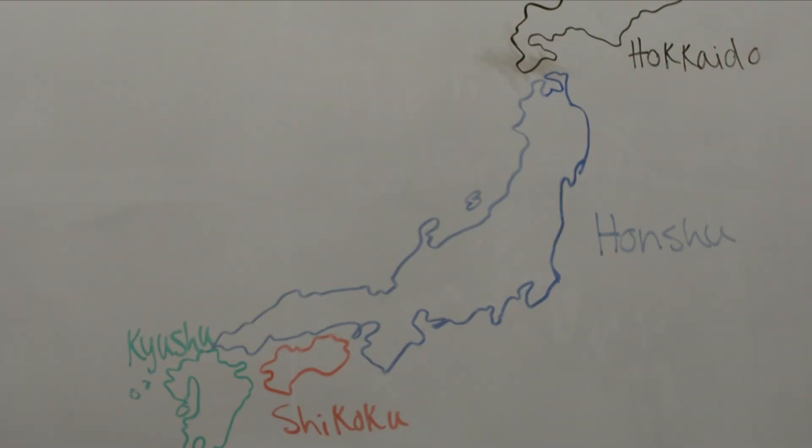Japan is comprised of four major islands: Hokkaido, Shikoku, Kyushu, and Honshu, the largest.